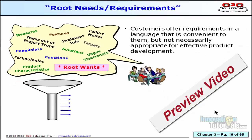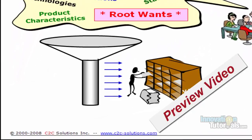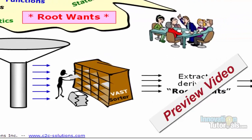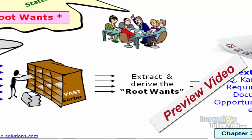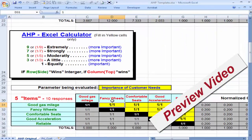To do that, we need to sift through all the verbatims we get from the customer and extract and derive what we call the root wants. These are the things that will go into our House of Quality. The first question we're going to ask is: which is more important, customer want A or B? The second question we'll ask is: how much more important is it, using this table here?